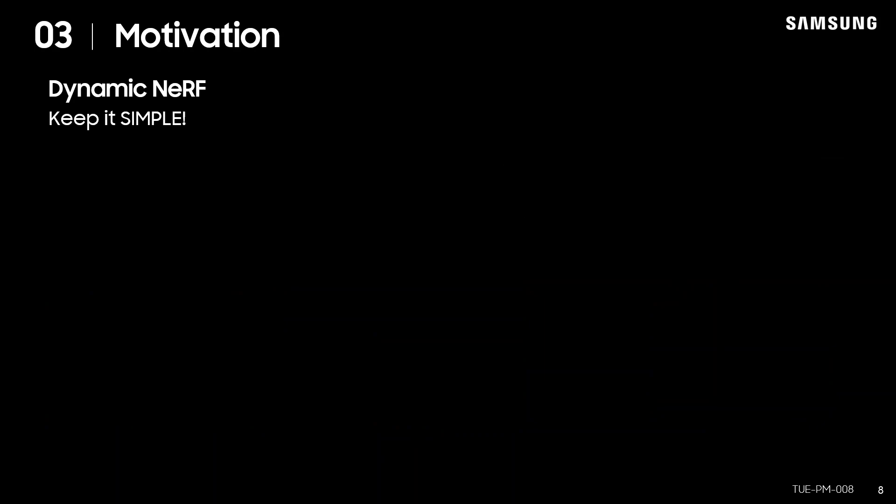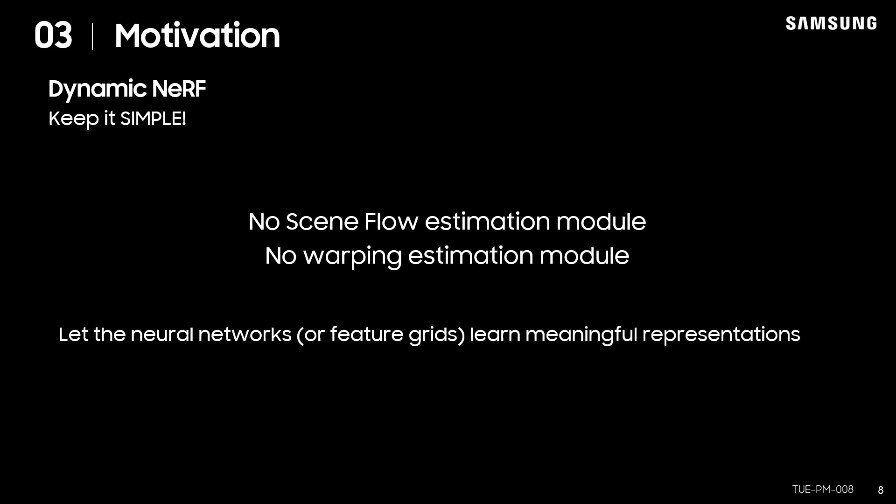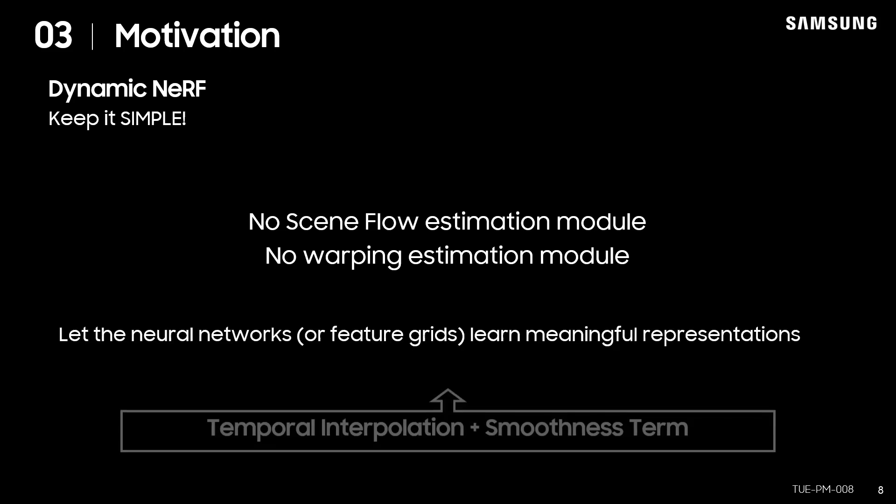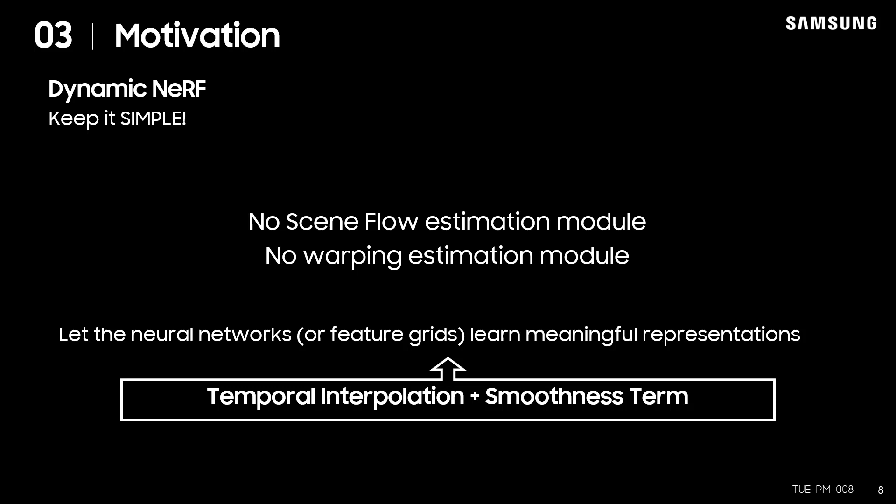In this work, we are focusing on how to learn meaningful and discriminative features from dynamic scenes while keeping the model structure as simple as possible. To this end, our model does not contain 3D scene flow estimation modules or warping estimation modules. Instead, we relate multiple frames by linearly interpolating two adjacent features and adding a simple smoothness term.